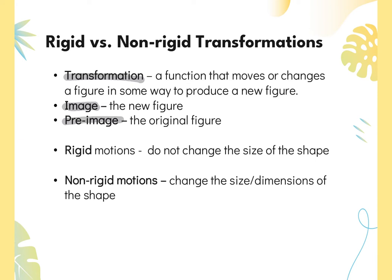There are two general types of transformations: rigid motions and non-rigid. Rigid motions do not change the size of the shape; non-rigid does. What we're going to talk about today is rigid — you're keeping the general size and shape. Non-rigid motions can make it bigger or smaller, kind of like similar triangles.